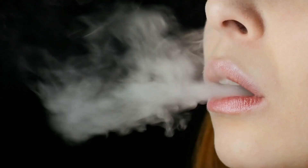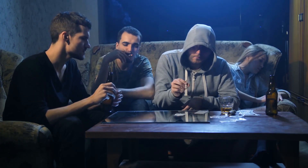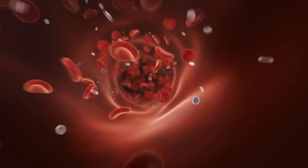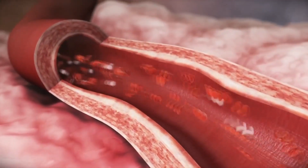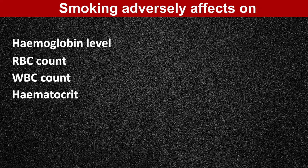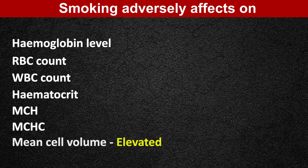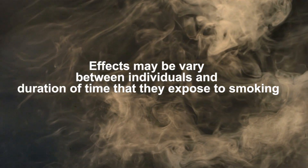Smoking is one of the major leading causes of death throughout the world. Both active and passive smoking have acute and chronic effects on hematological parameters. Continuous cigarette smoking adversely affects hemoglobin level, red blood cell count, white blood cell count, hematocrit, mean corpuscular hemoglobin, mean corpuscular hemoglobin concentration, and mean cell volume, which also get elevated. However, effects may vary between individuals.